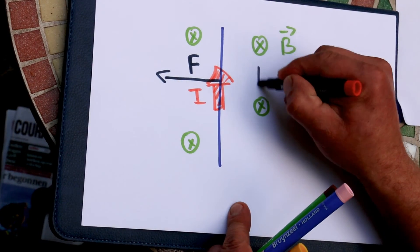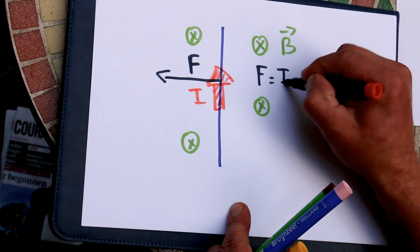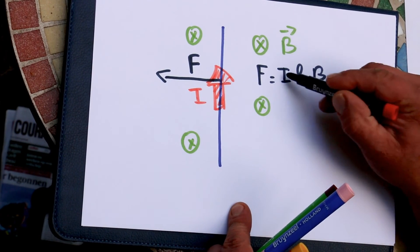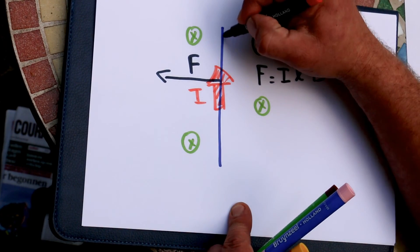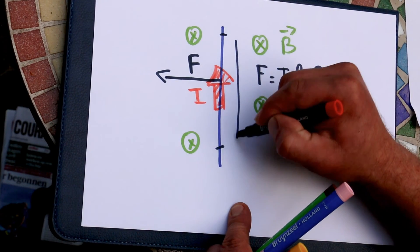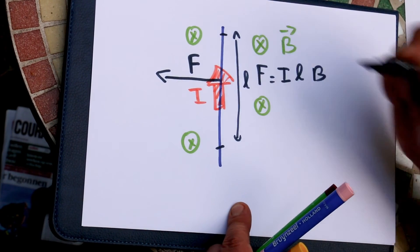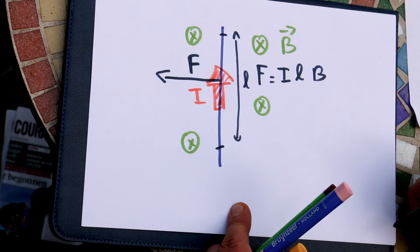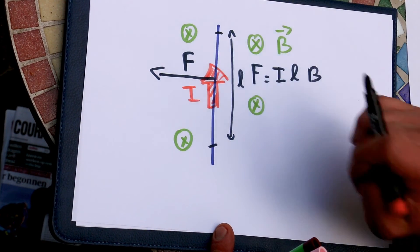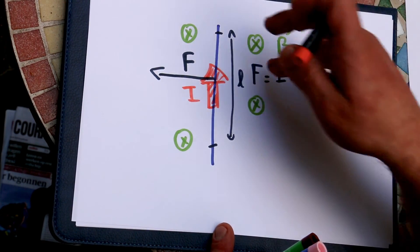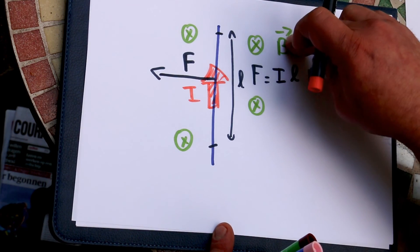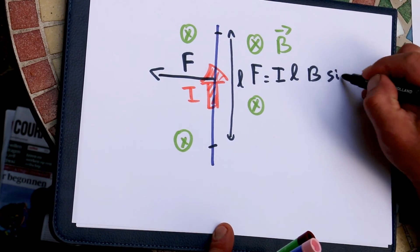The magnitude of this force will be I·L·B. I is the current, B is the field, L is the length of the wire which is within the magnetic field. Now, if you have an angle between the wire — that is the direction of the current — and the field, then you have sinθ here.